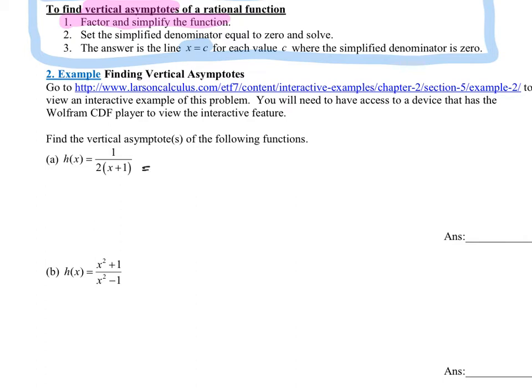So all we know is this bottom here cannot equal 0. So I'm going to divide both sides by 2, and I'd have x plus 1 equals 0 because 0 divided by 2 is 0. I subtract 1 from both sides and I end up with x equals negative 1. So that would be our vertical asymptote. Notice I do have to write x equals.